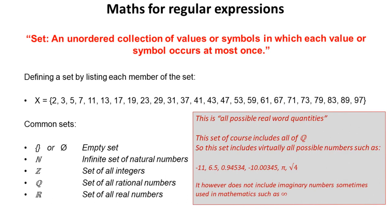On top of this, we have R. This is the set of all real numbers. So this is pretty much all possible real world quantities. This set, therefore, encompasses all of Q, Z and N. This covers virtually everything: fractional numbers, fractions, minus, positive, things like pi. It doesn't, however, include imaginary numbers sometimes using mathematics such as infinity.